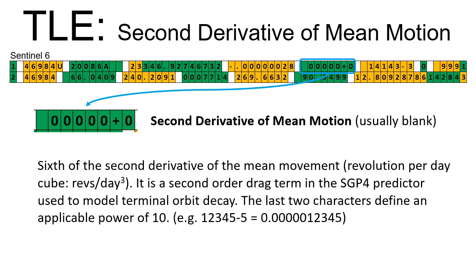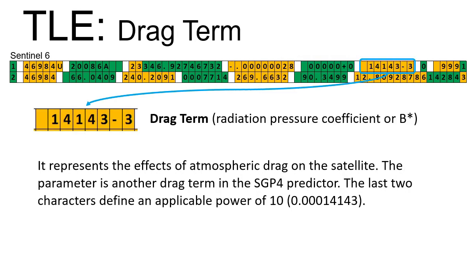Second derivative of mean motion. This parameter is usually blank. Drag term represents the effects of atmospheric drag on the satellite. The parameter is another drag term in the SGP4 predictor.